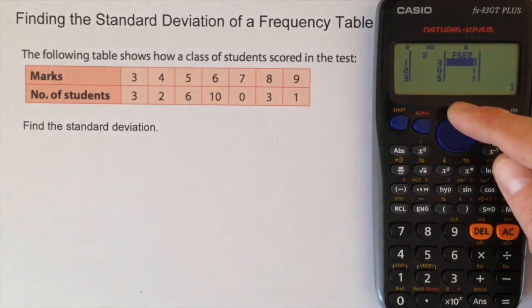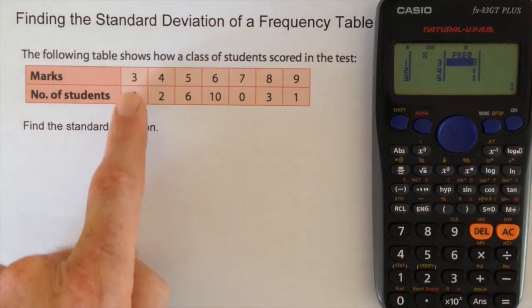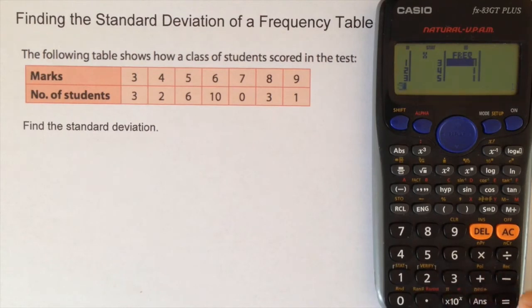I'm going to use the arrow button to now write in the appropriate frequencies. So 3 students got 3 marks, so I write 3 and equals. 2 students got 4 marks, 6 students got 5 marks, 10 students got 6 marks, no student got 7 marks, 3 students got 8 marks, and 1 student got 9 marks.